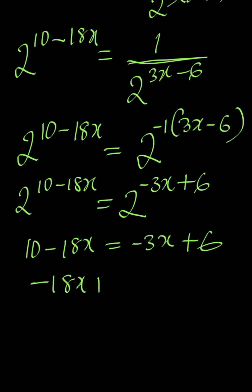Minus 18x plus 3x is equal to 6 minus 10. And minus 18x plus 3x is equal to minus 15x, equal to 6 minus 10 is minus 4.